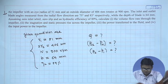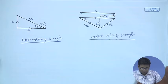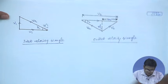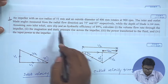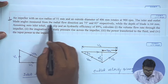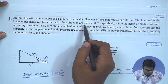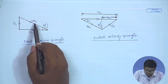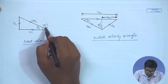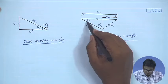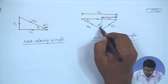Let us first look into the velocity triangles. This is the inlet velocity triangle where the blade angles are measured from the radial direction — 75 degrees at inlet and 83 degrees at outlet. Radial velocity makes an angle of 75 degrees with the flow direction at inlet, and radial velocity at outlet makes an angle of 83 degrees with respect to the flow direction.